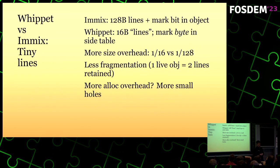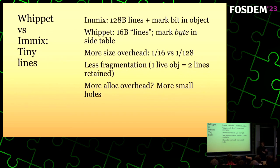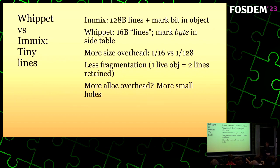IMIX has 128-byte lines, and if just one object on a line is left over, the line is kept live — nobody will allocate into it in the next collection. For various reasons that didn't make sense to me, so in Whippet we have 16-byte lines. Effectively the line mark table is the object mark table — you only have one mark byte per object, and it's a byte because of parallel markers. It's a bit more overhead in terms of space but maybe more parsimonious with memory. It's an open question.